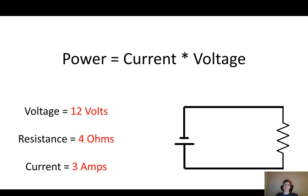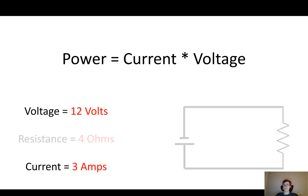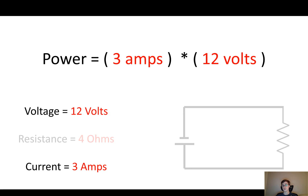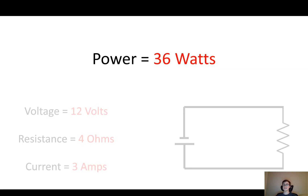Let me show you how to use it. Power equals current times voltage. So with this circuit — 12-volt battery, 4-ohm resistor, 3 amps of current — I look at the current and the voltage. The current is 3 amps, the voltage is 12 volts, so 3 times 12 is 36. The power is 36 watts — much closer to a light bulb than a grenade, so this is probably a safe machine to build.